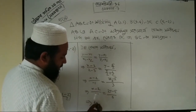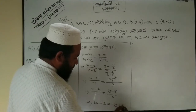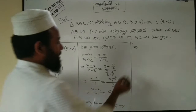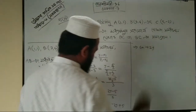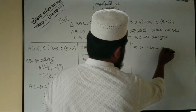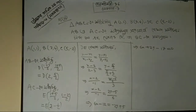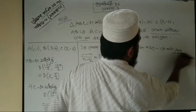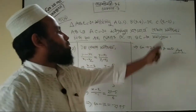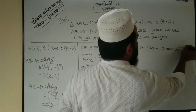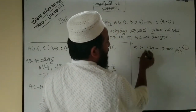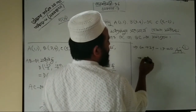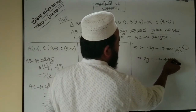We get 6x minus 12 minus 2y plus 5. Simplifying: 6x plus 2y minus 17 minus 2y plus 5, which gives 6x plus 2y minus 17 equals 0. Writing the result: 6x plus 17.